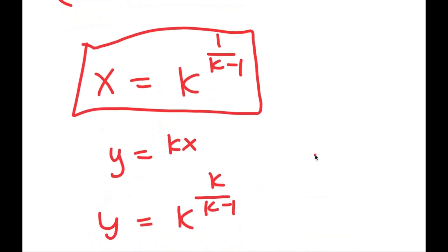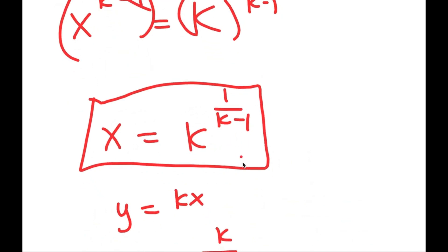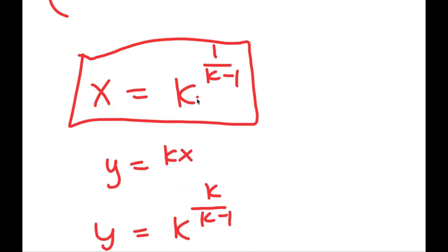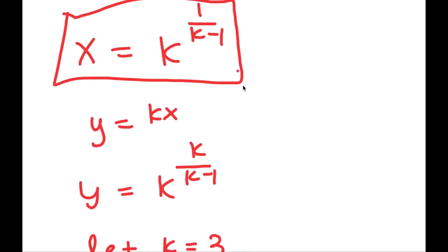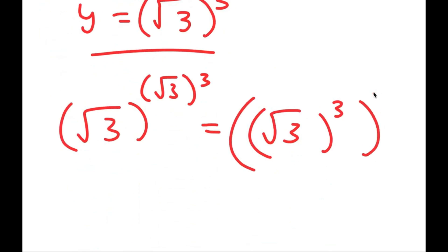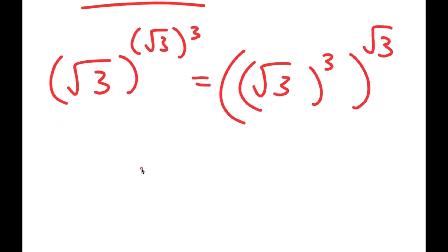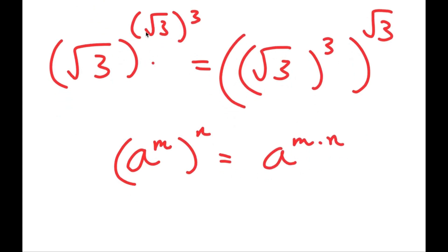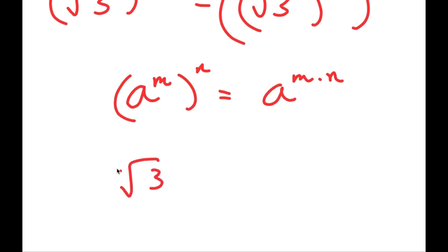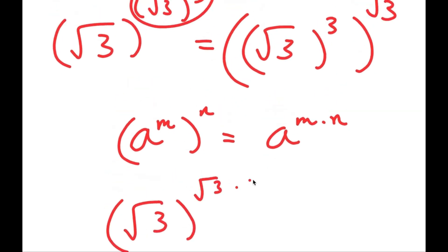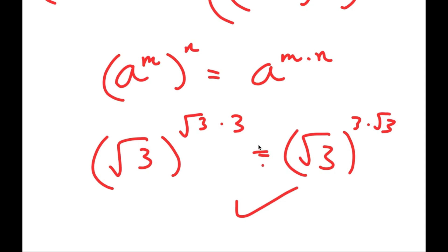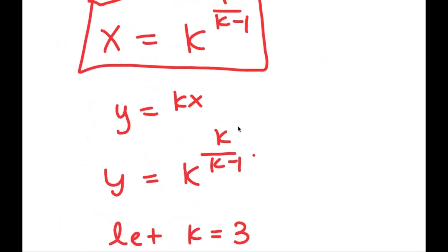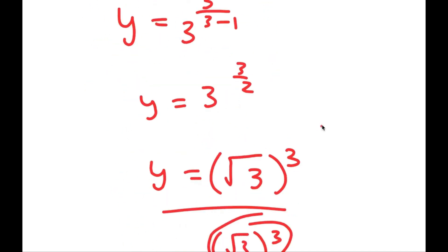Using the property a^(m^n) = a^(m·n), the left side becomes √3^(√3 · 3) and the right side becomes √3^(3 · √3). These two expressions are equal to each other, confirming that our values of x and y satisfy the original equation.